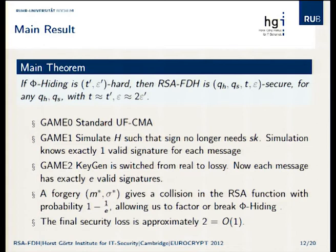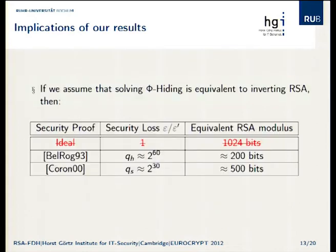If I could just take you back: if we can assume that phi-hiding is as hard as solving RSA — or at least as hard as factoring — then we now do have an ideal-ish security loss of order one, and we get the full 1,024 bits of security that we wanted.